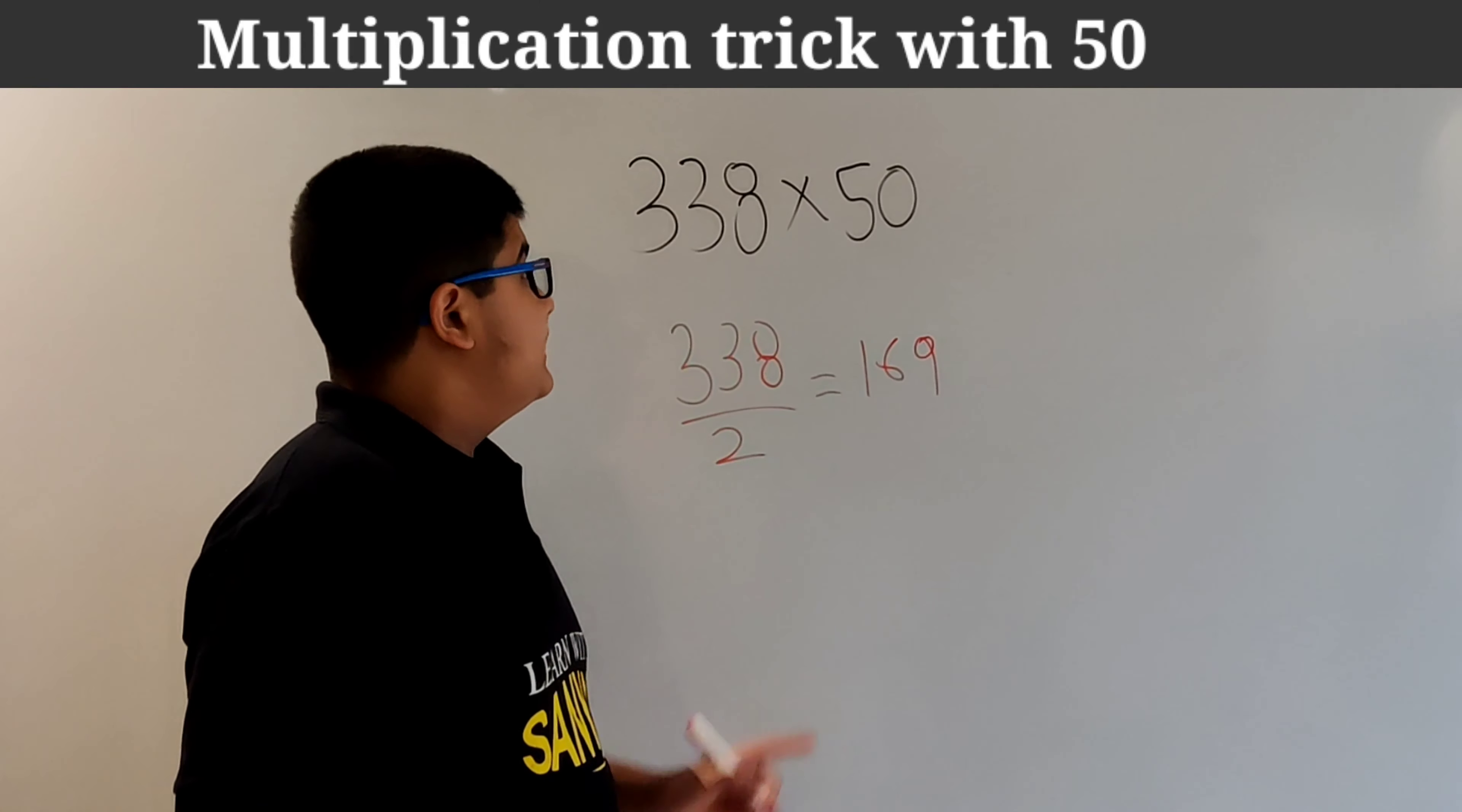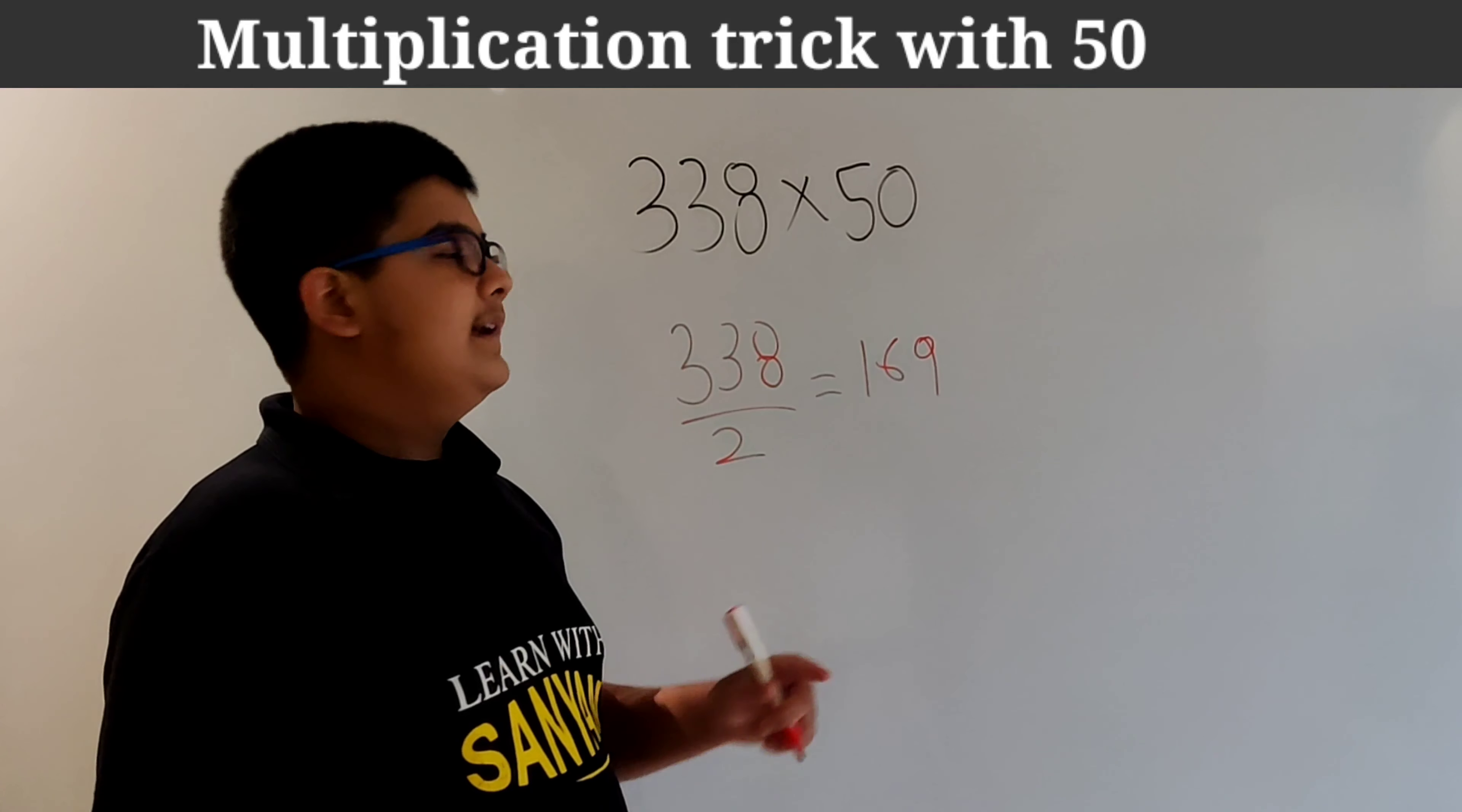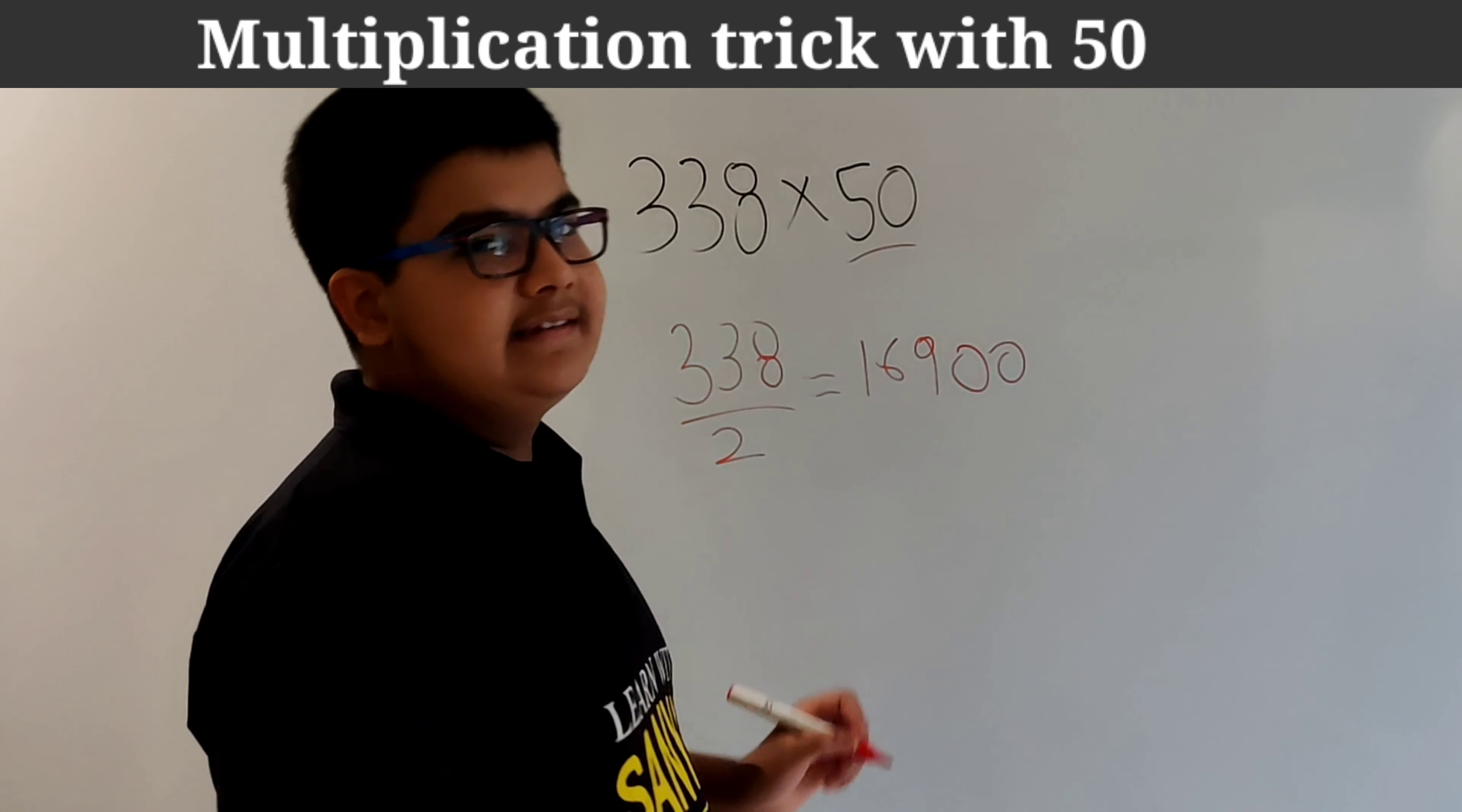And now just put 2 zeros in the end. So in multiplication with 5 we were putting 1 zero in the end. But in multiplication with 50 we will put 2 zeros in the end. So 16900 is our answer.